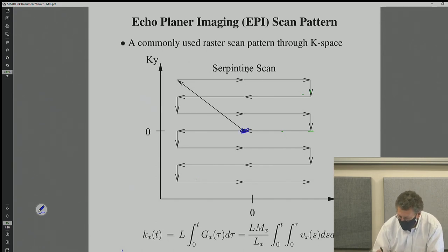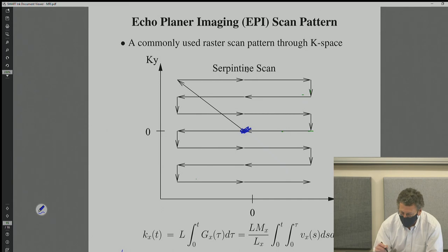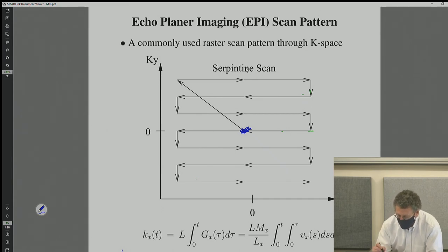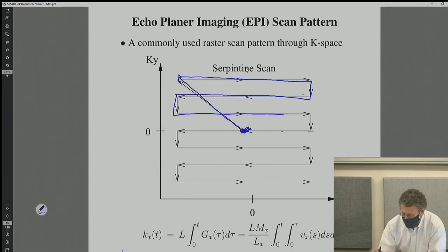You start off at zero — that's the center of the coordinate system, the DC. For EPI (echo planar imaging), you start off by moving over to one side, and then you go down the scan path like this — that would be a typical basic scan path.